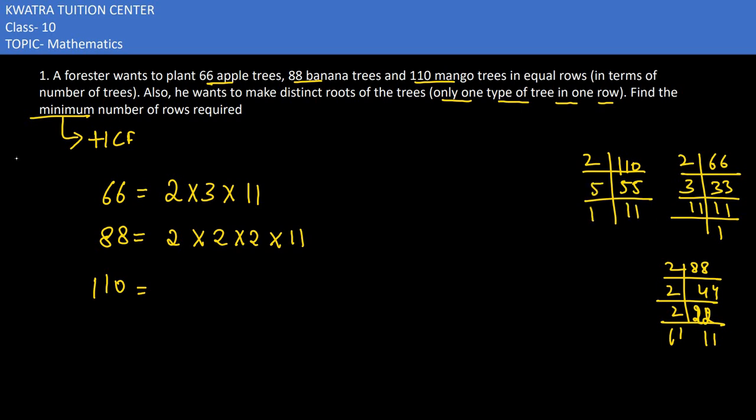For 110: 2, then 5, 11 in the end, last will be 1. So the factors become 2 into 5 into 11.